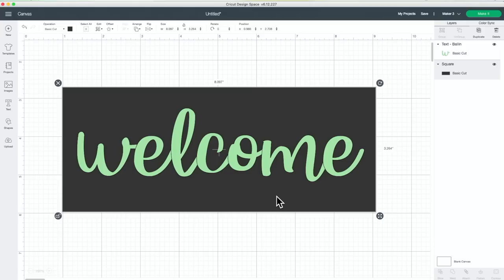So I put in an eight by three and a quarter blank shape from over here on the left hand side. I just grabbed a basic shape, put it in there. You need to size yours to whatever size you want.